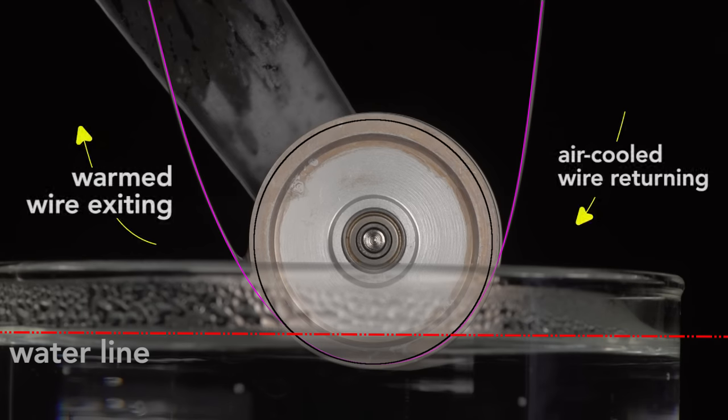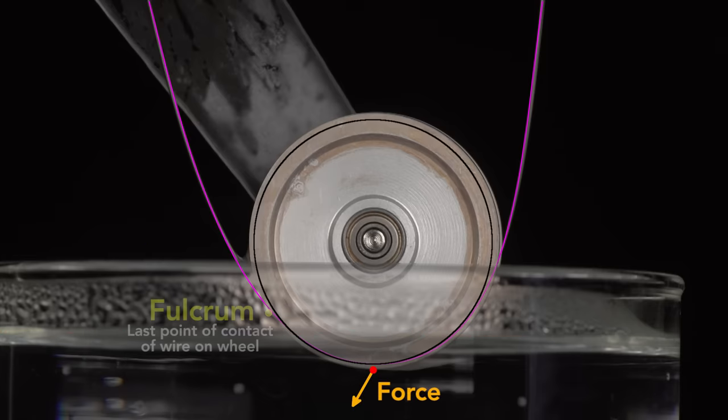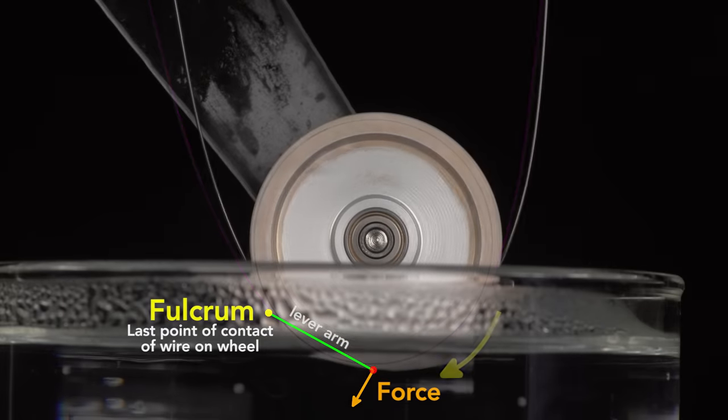Let's break this down. On the right, the air-cooled wire returns. It wraps onto the wheel. As the water heats the wire, it starts to straighten, but is restrained by being in a loop. This creates a force at this point on the wheel from this fulcrum, which is the last point of contact of the wire on the wheel. This generates a force about the center of the wheel, which is transmitted as torque and sets in motion the engine.